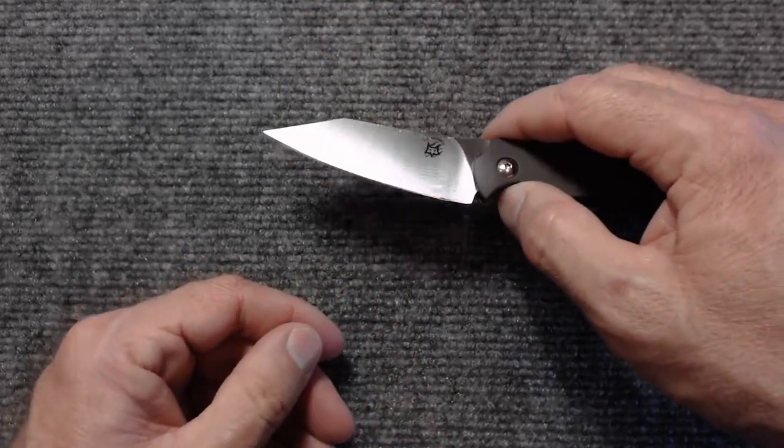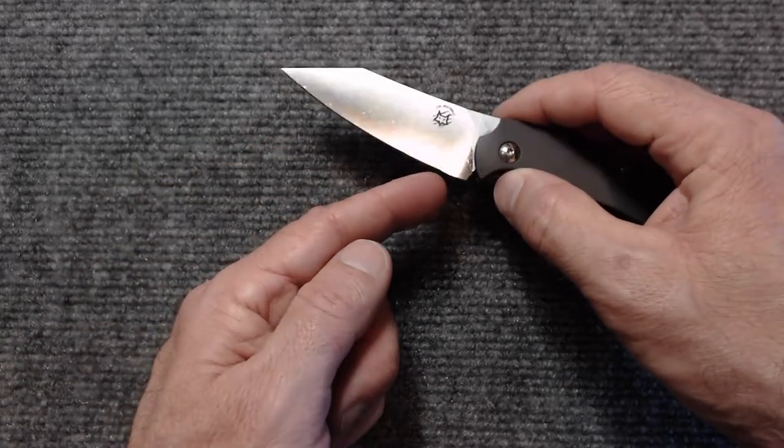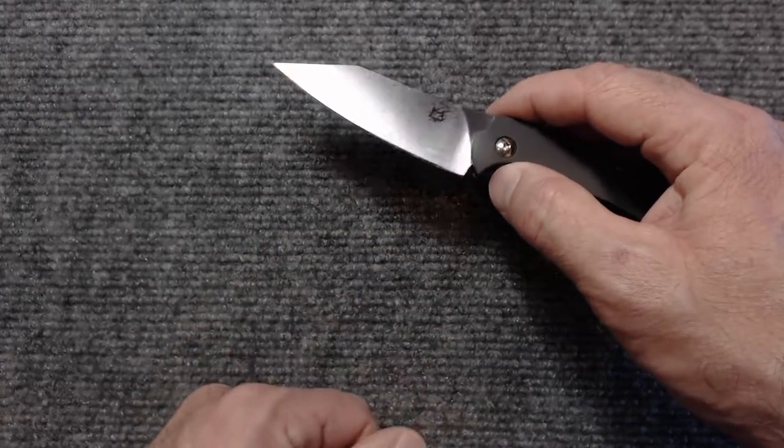When I was sharpening this the other day, I didn't want to get too aggressive with the Lansky, so I've got it most of the way sharpened down there, but there's a little bit of the original grind left in this area that I need to sharpen up.